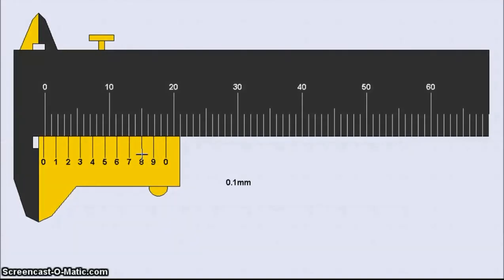Take note that for negative zero error, we have to start counting from the right. For this particular example, the zero error is negative 0.02 cm.